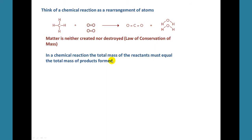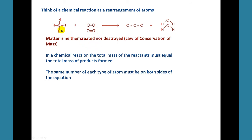So atoms don't just appear and they don't disappear. That means we must have the same types of atoms on both sides of the equation, and the same number of each type of atom on both sides of the equation.